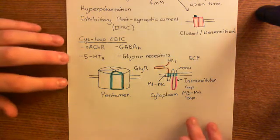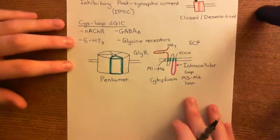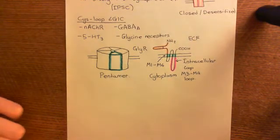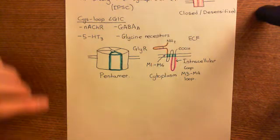Right, so, we are in the process of discussing the structure of the glycine receptor, and I'm just about to describe to you what a cis loop is.